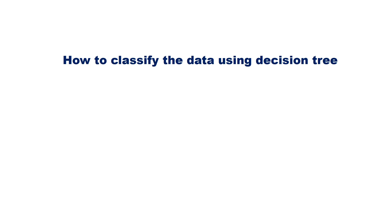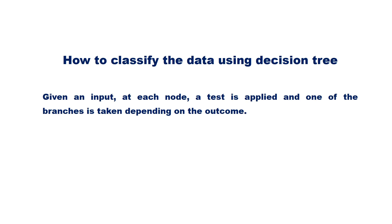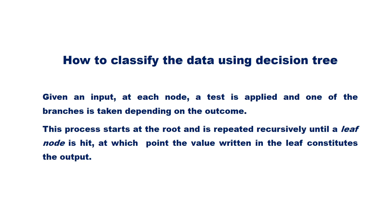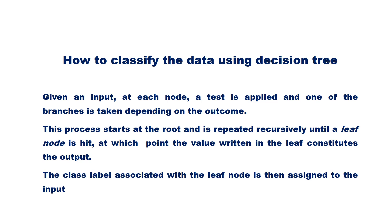How to classify data using a decision tree? Given an input, at each node a test is applied and one of the branches is taken depending on the outcome. This process starts at the root and is repeated recursively until a leaf node is hit, at which point the value written in the leaf constitutes the output. The class label associated with the leaf node is then assigned to the input.